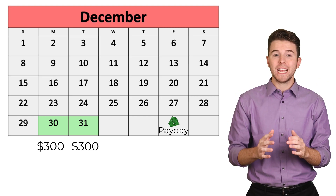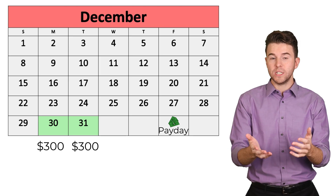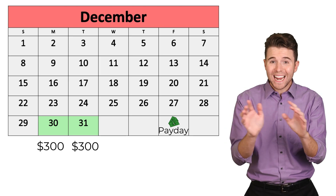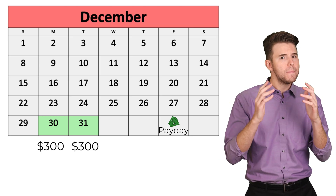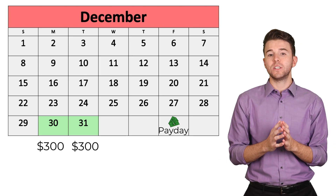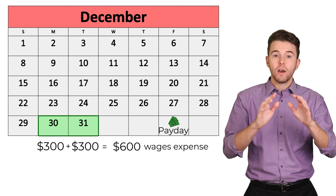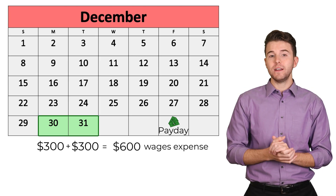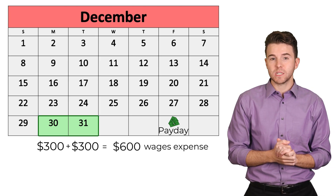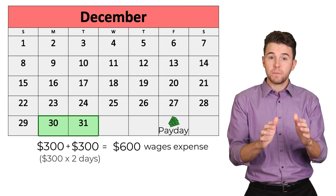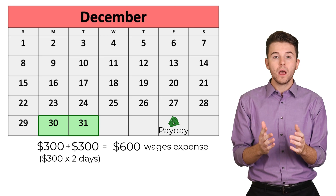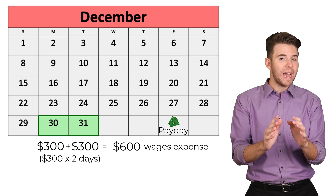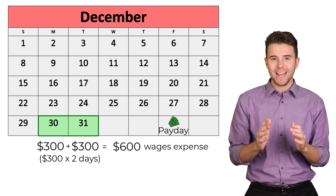Because the employee has earned those wages but has not yet been paid, we must record an adjusting entry for $600 of wages expense, computed as $300 per day multiplied by two days.